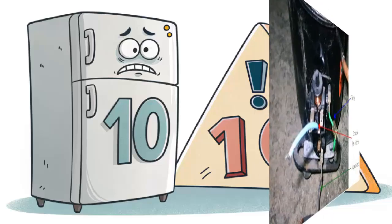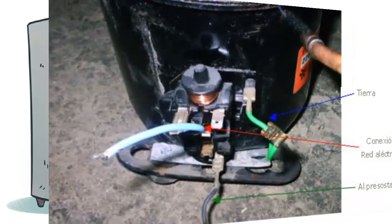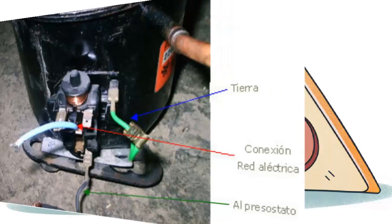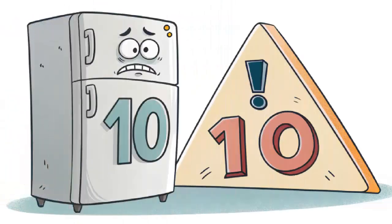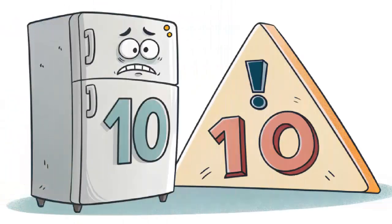1. Loose cable or connection. This causes intermittent voltage or current supply, which may shut off the compressor after it starts. Check all cable connections to ensure they are secure.